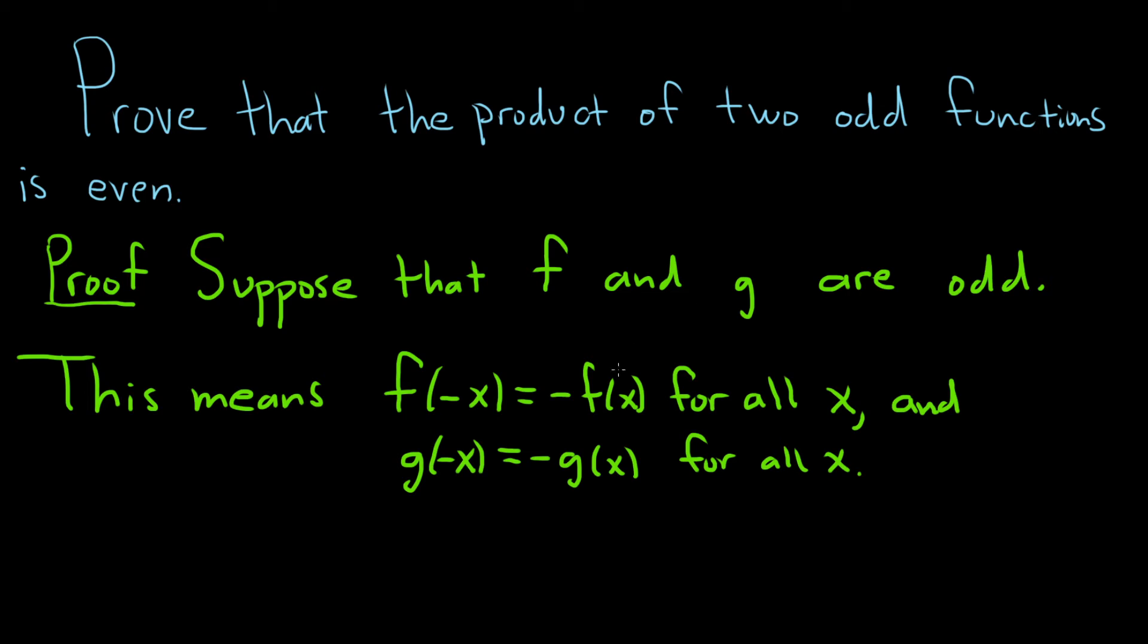So we've written down our assumption and what it means. Now we need to take a step back and think about what we're really trying to show. We're trying to show that the product is even. So what does it mean to be even?